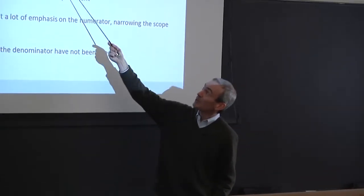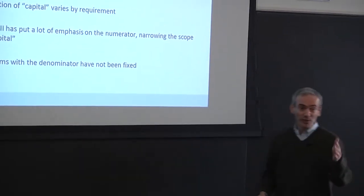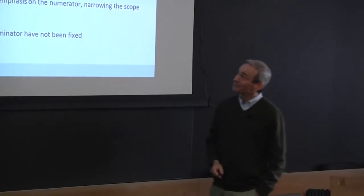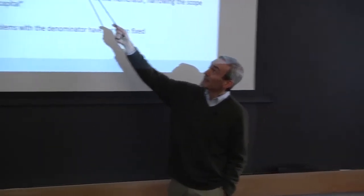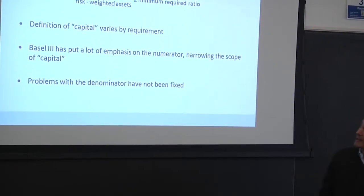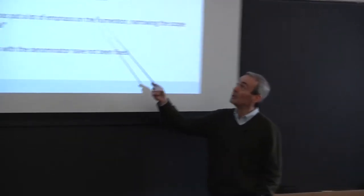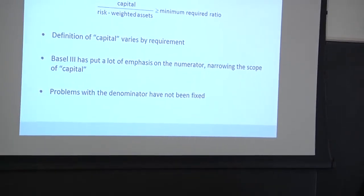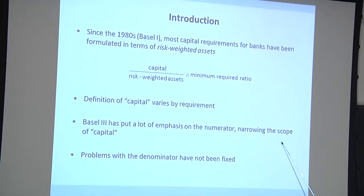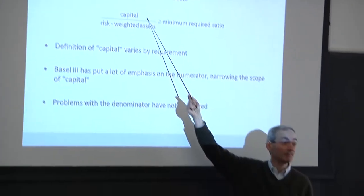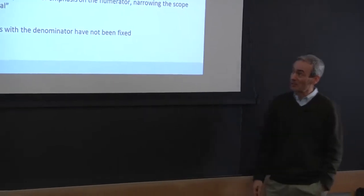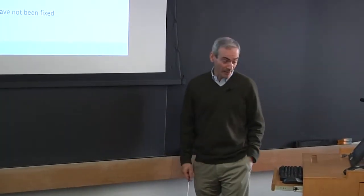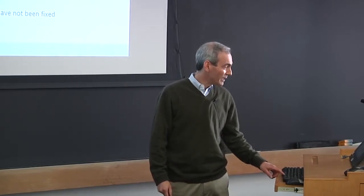Now the definition of exactly what gets counted as capital varies by specifically which of the many capital requirements you're looking at. But I'm going to be talking about the risk weighting that goes into the denominator. So Basel 3, so the latest incarnation, so Basel 2 substantially complicated, expanded the complication of the way the risk weighting is done. Basel 3 has primarily put a lot of emphasis on the numerator, narrowing what counts as capital. And also making the required capital ratio more stringent. But problems with the denominator have not been fixed. The risk weights are basically for the most part the same as they were before. Now just to help fix ideas, let's walk through a little example here, a Basel 1 example.